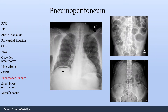So pneumoperitoneum — this is free air as a result of perforated bowel. You can see here you have free air under the diaphragm, as we've seen in a prior image. One common thing to mistake for free air under the diaphragm is actually the stomach gas bubble. Often you can see some food and then an air bubble right here. That is not free air under the diaphragm — that is just air within the stomach.